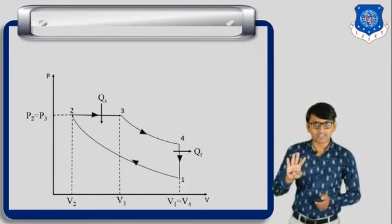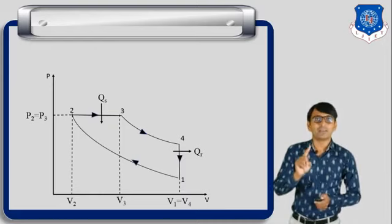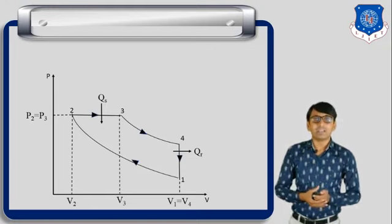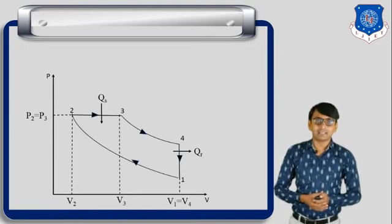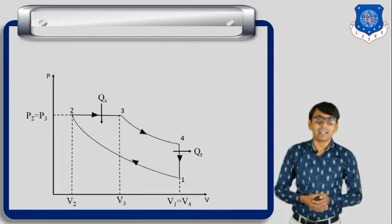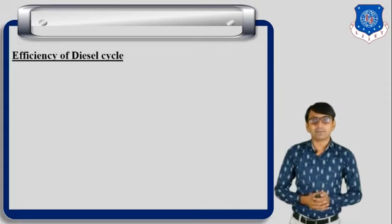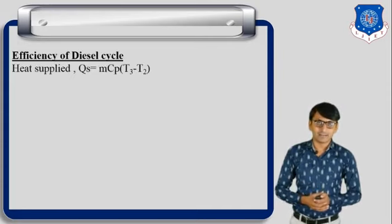This is the PV diagram of the Diesel cycle, showing four processes: 1-2, 2-3, 3-4, and 4-1. Qs is heat supply and Qr is heat rejected. In the PV diagram, pressure at points 2 and 3 is the same: P2 equals P3. Volume V1 equals V4. Now we discuss the derivation of efficiency of the Diesel cycle.